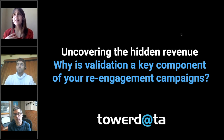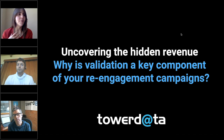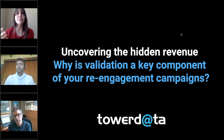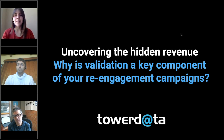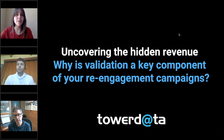You want to re-engage all these contacts who maybe haven't opened an email or partaken in any of your content over the past year or so. And you're sending out this email and suddenly your deliverability has gone way downhill. Where do you go from here? How do you solve this? Because that's the last thing you want to happen.